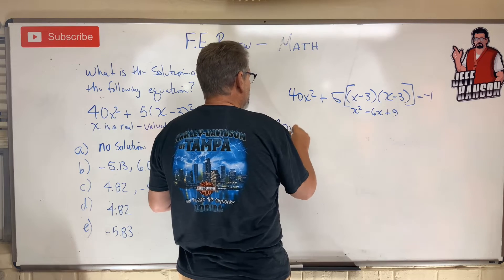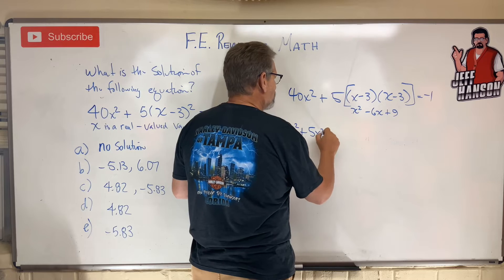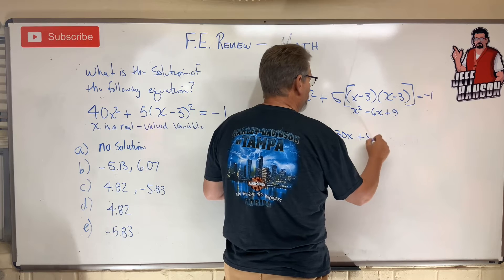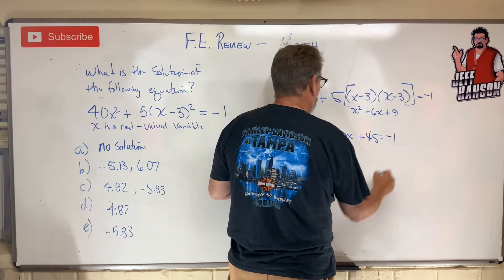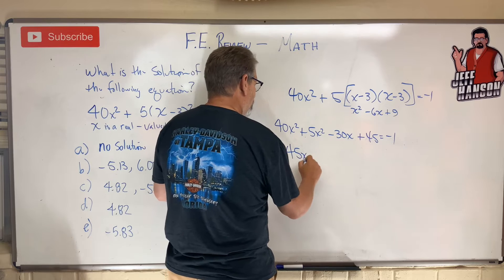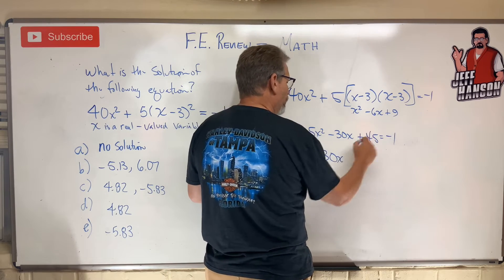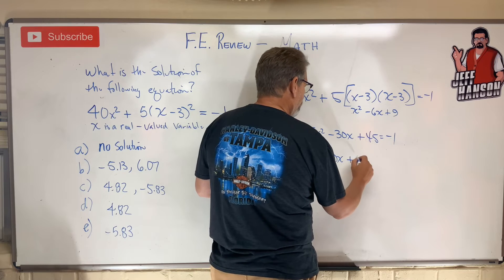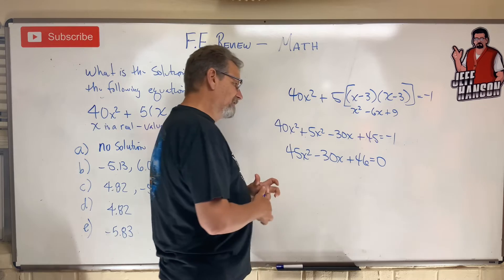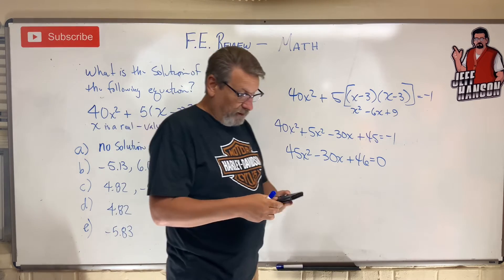That gives us 40X² plus 5X² minus 30X plus 45 equals minus 1, which combines to 45X² minus 30X plus 46 equals zero. Now I've got it in a nice quadratic equation form.